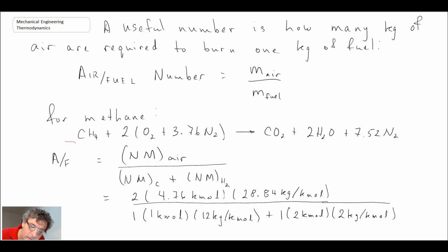When you go through this, you get an air-to-fuel ratio of 17.16. That would be the air-to-fuel ratio for methane for a stoichiometric reaction. You can compute that for whatever fuel you might be combusting.